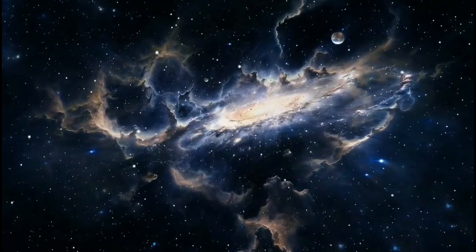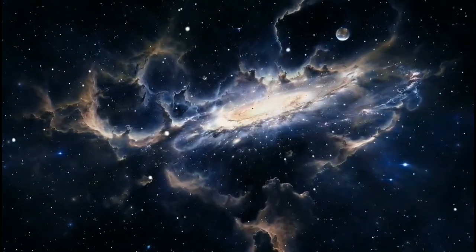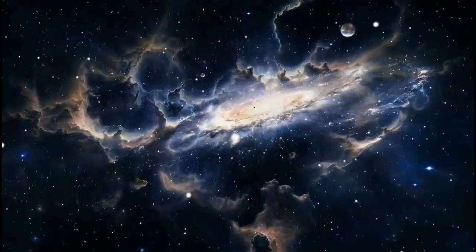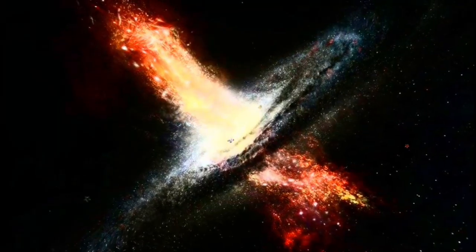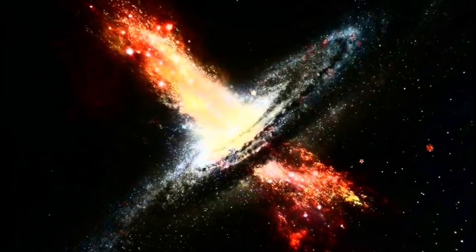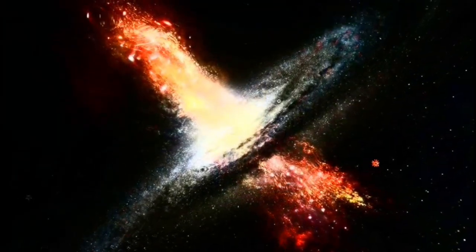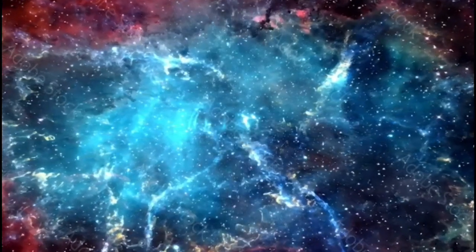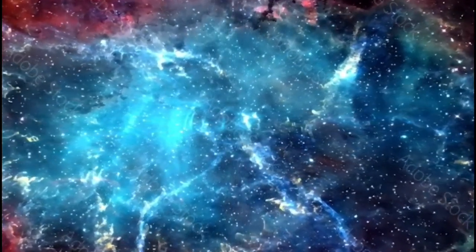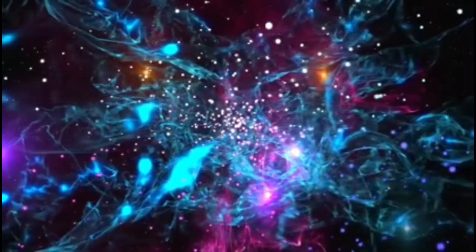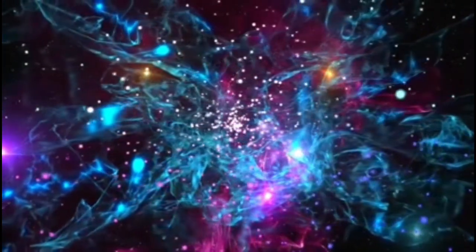Although Betelgeuse's supernova is not expected to have harmful effects on Earth, it will interact with our planet's atmosphere and magnetic field in intriguing ways. The energy burst from the explosion, especially the arrival of cosmic rays and charged particles, could create more intense auroras, expanding the regions where the northern and southern lights are visible. While these cosmic rays could potentially disrupt satellite communications and some technology on Earth, the disturbances are anticipated to be minor and short-lived.